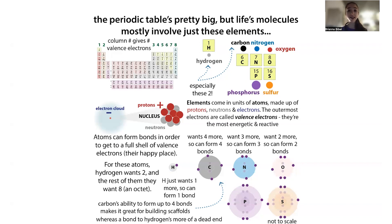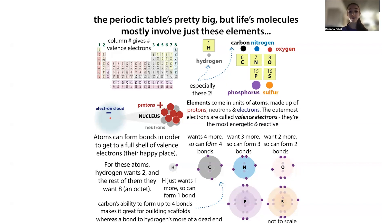In a covalent bond, different atoms kind of sync up — they overlap regions of their electron clouds in order to share electrons to form bonds. They share these electrons in order to fulfill their desire to get their desired numbers of electrons. Each atom has a fixed number of protons — the atomic number — but the number of electrons can vary. Each has an ideal number of electrons, and most of the time this corresponds to having a full outer electron shell.